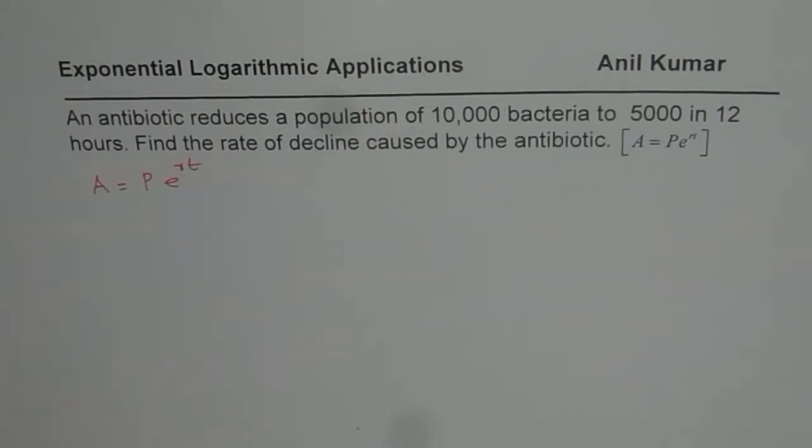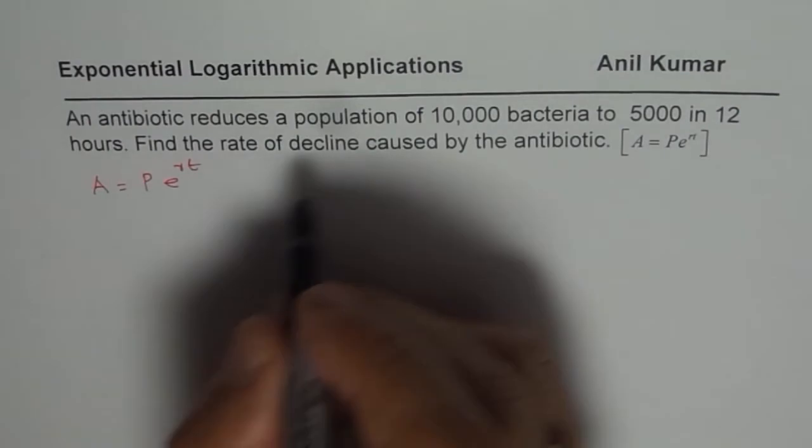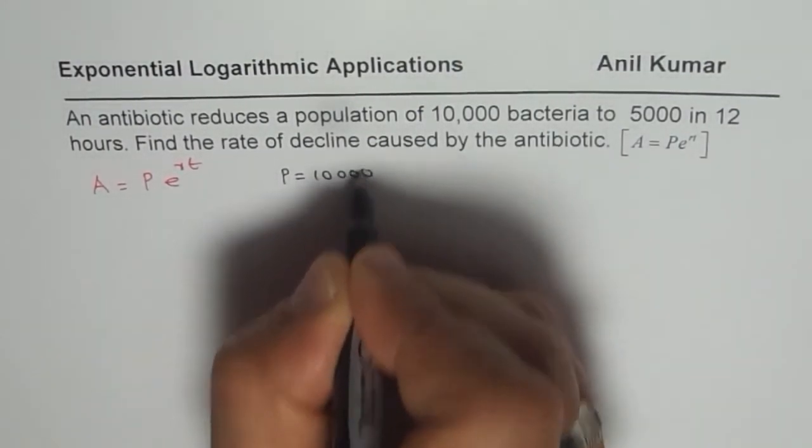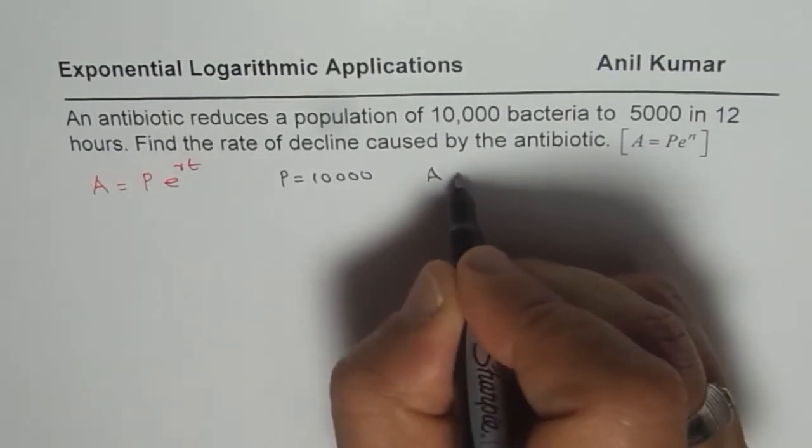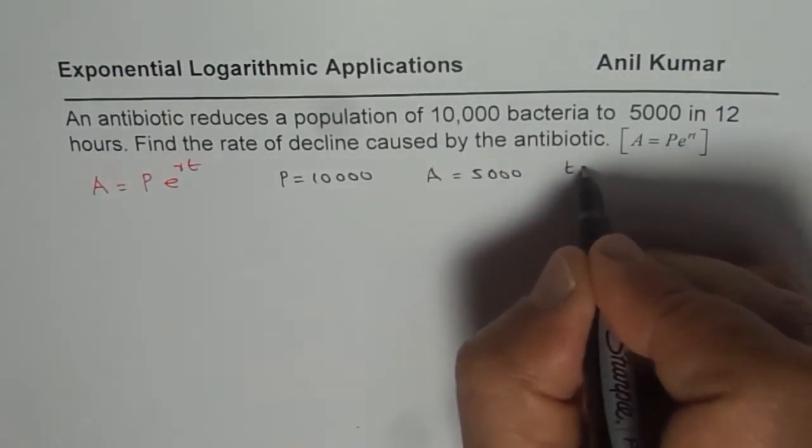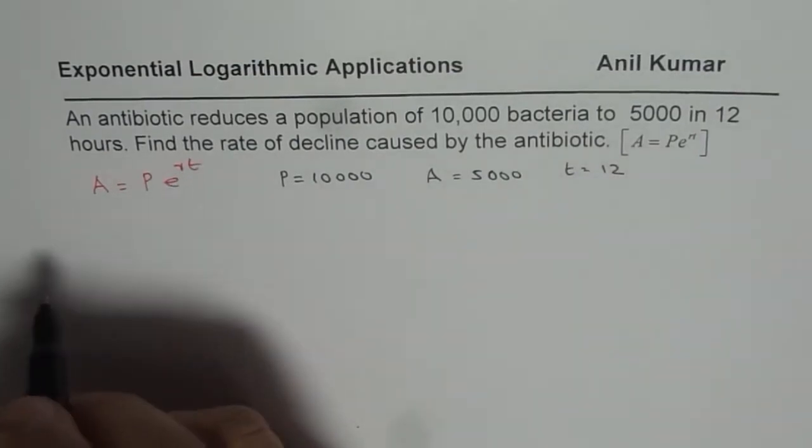According to the values given to us, initial population is 10,000, so we say P equals 10,000. Final value which we get is 5,000, and time duration T is 12 hours. If I substitute all this,